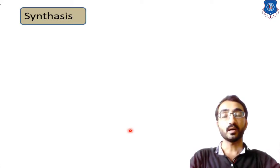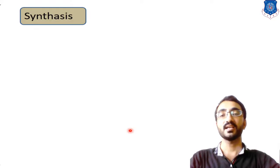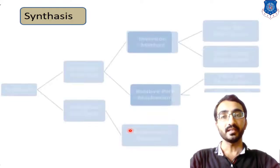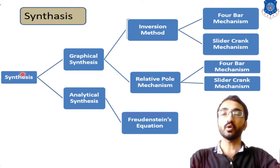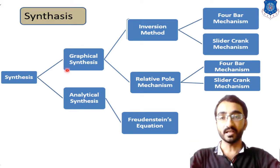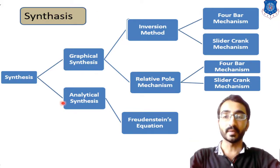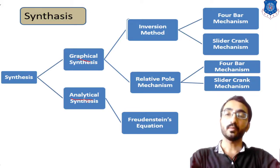The first word is synthesis. Synthesis means designing a new mechanism or machine to get the design output. This synthesis process can be divided into different types. For example, if we want to design any new mechanism, we can do it either by graphical method or by analytical method. So we can divide this process into mainly two types: graphical and analytical method.